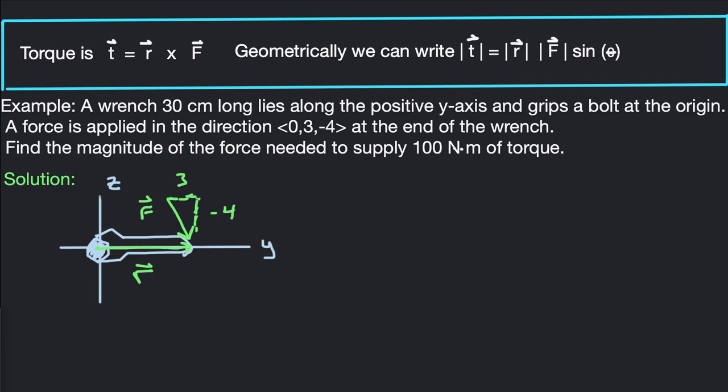Find the magnitude of the force needed to supply 100 newton meters of torque. So torque, by definition, is a radial vector, so the distance away from wherever the rotation happens, which is the radial vector, and then the force applied. So radial vector cross product with the force vector. That's the definition of torque.